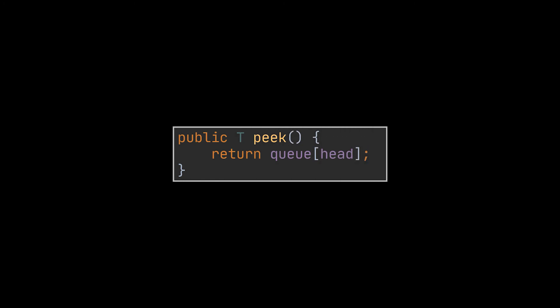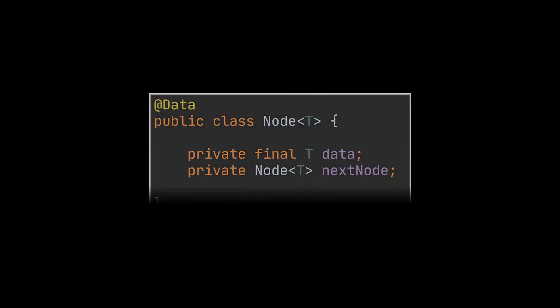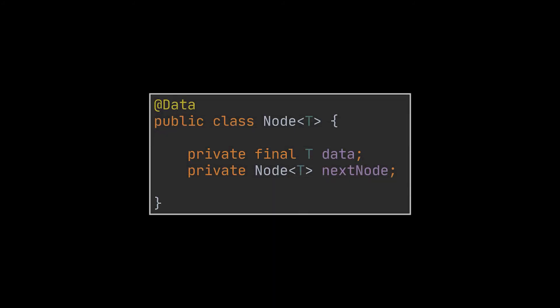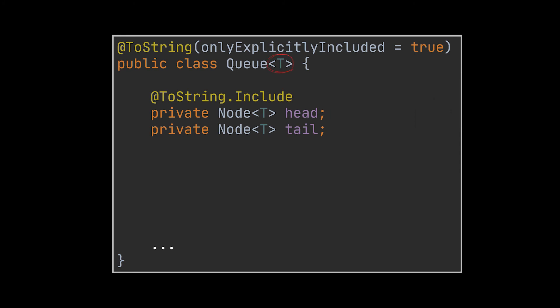The peek operation is the easiest — it simply returns the element at the head of the queue. Now let's implement the queue using the linked list data structure. Because we are using linked lists, we have to create a node. The node consists of our data and a reference to the next node in the queue. The @Data annotation from Lombok generates getters, setters, a toString method, and a constructor for us.